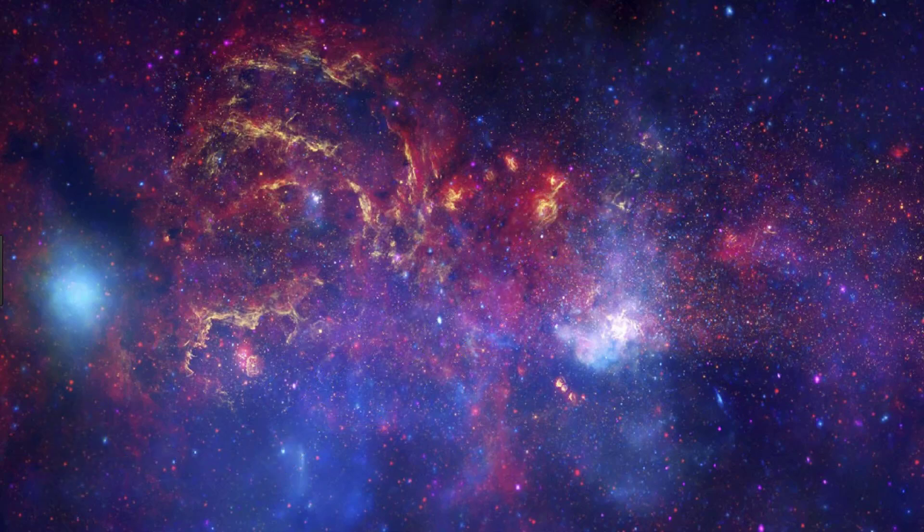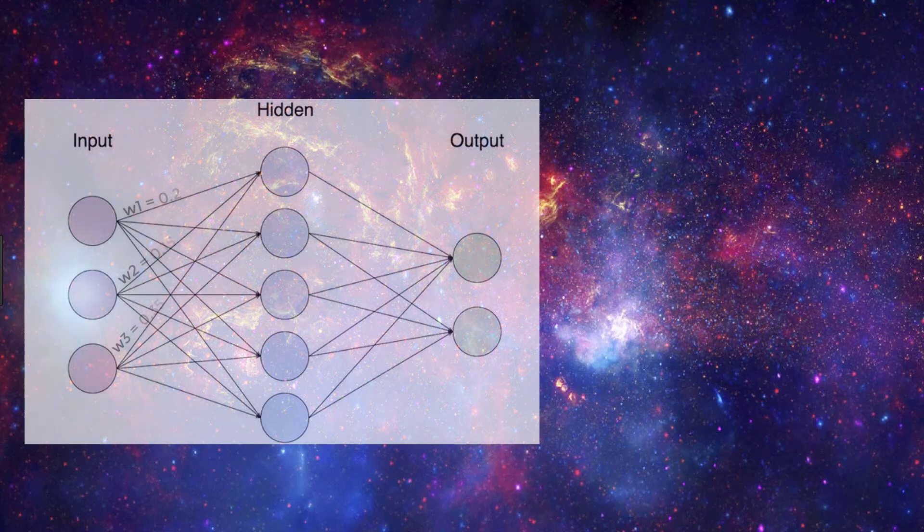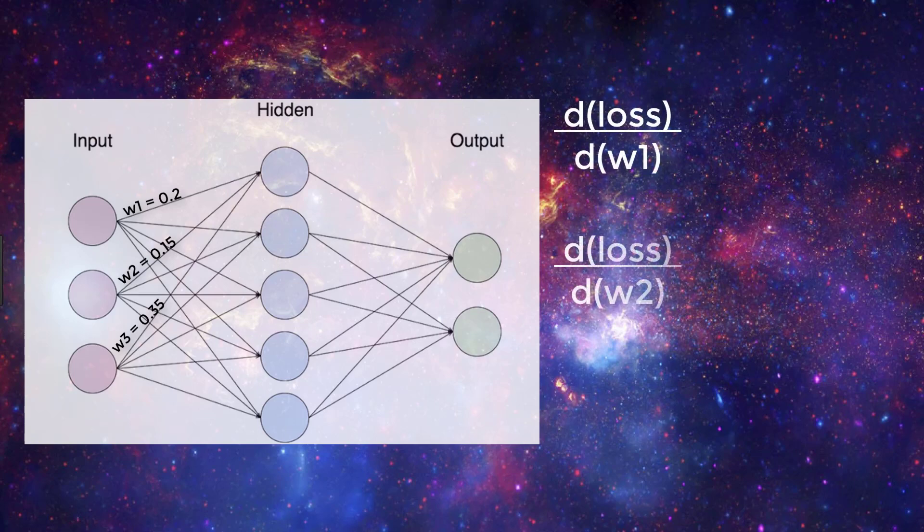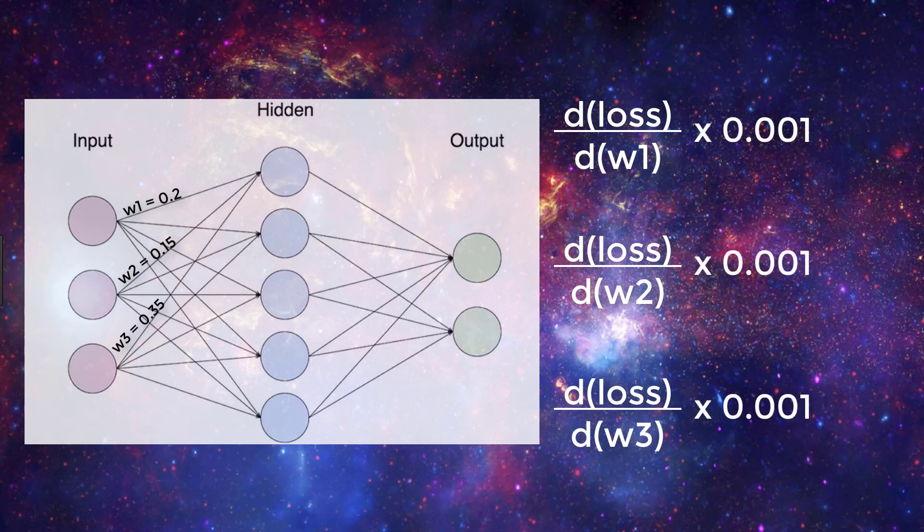Before going further, let's first pause for a quick refresher. We know that during training, after the loss is calculated for our given inputs, the gradient of that loss is then calculated with respect to each of the weights in our model. Now once we have the value of these gradients, this is where the idea of our learning rate comes in. The gradients will then get multiplied by the learning rate.